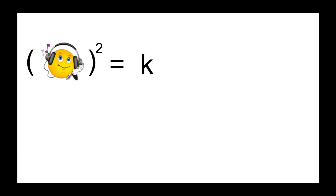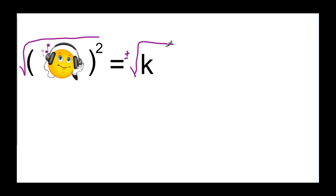What I'm trying to show with this graphic is: it doesn't matter what's squared on this side. If it equals k and I take the square root of both sides — plus or minus on the constant side — the square is going to cancel the square root, leaving that expression equal to plus or minus k.